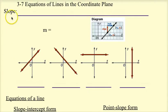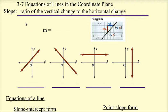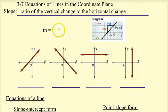We're going to start off with what slope is. Slope is the ratio — a comparison of two numbers — specifically the ratio of the vertical change to the horizontal change. Vertical is up and down, so that's the change in the y's, and horizontal is left to right, so that's the change in the x's. That's the definition in words.